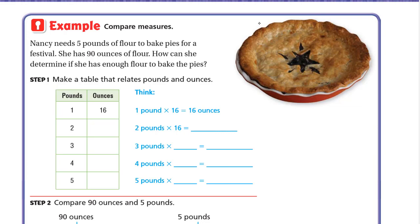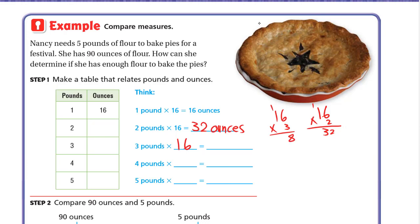One pound is 16 ounces — we multiply by 16 to turn pounds into ounces. So one times 16 is 16 ounces. Two pounds: two times 16 — two times 6 is 12, write 2 carry 1; two times 1 is 2 plus 1 is 3, so 32 ounces. Three pounds: three times 16 — 3 times 6 is 18, write 8 carry 1; 3 times 1 is 3 plus 1 is 4, so 48 ounces.